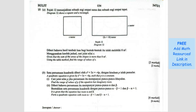Question number 15. Diagram 12 shows a square and a rectangle. Given the sum of areas — that means these two added together — is more than 8 square meters. Using the table method, find the range of values of x.